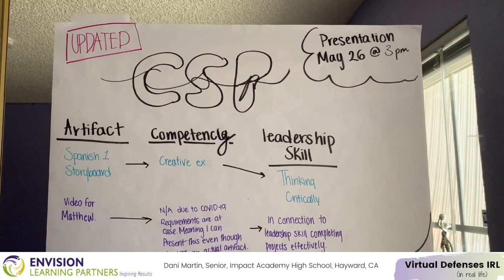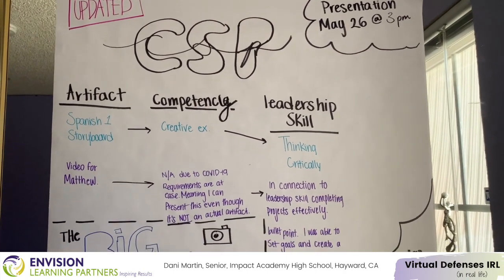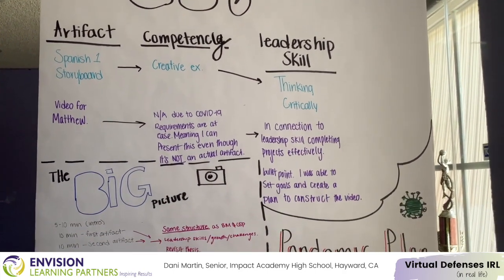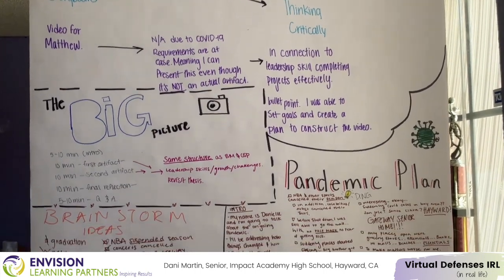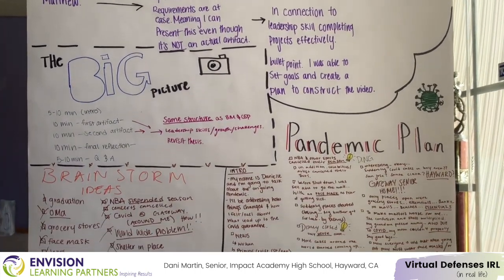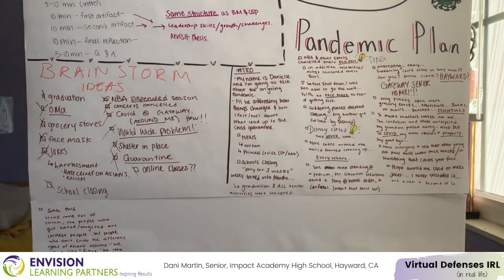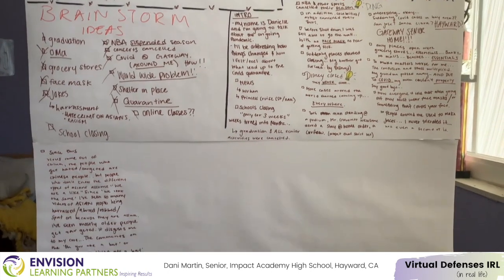So this is something that helps me figure out what I'm going to do for CSP. It's just a little organization chart and I brainstorm and I write what I really want to talk about in my pandemic slides.